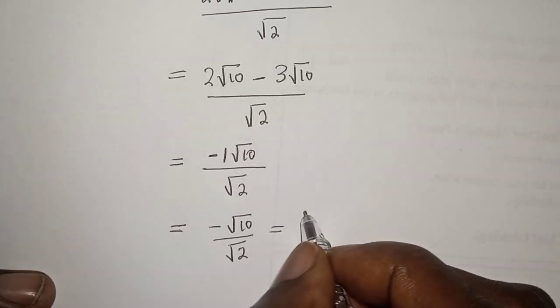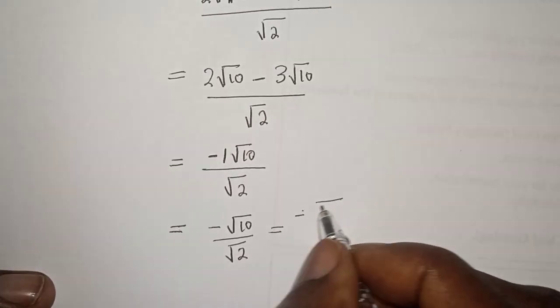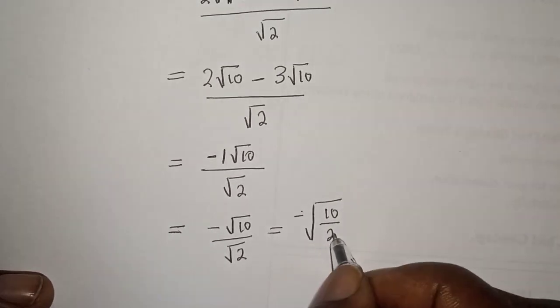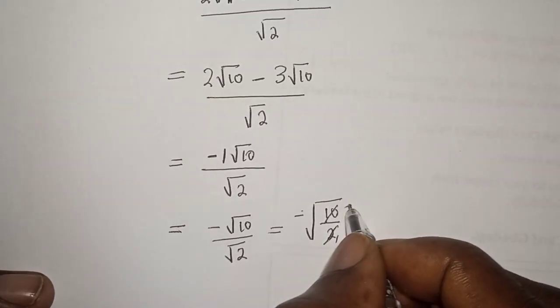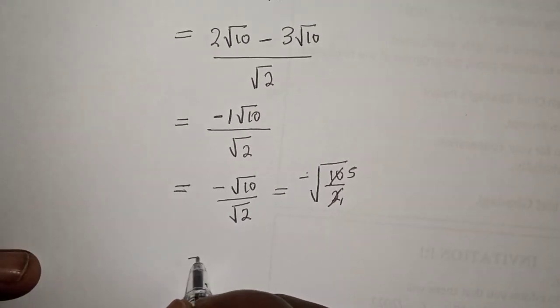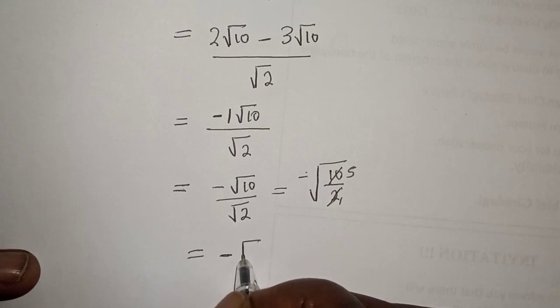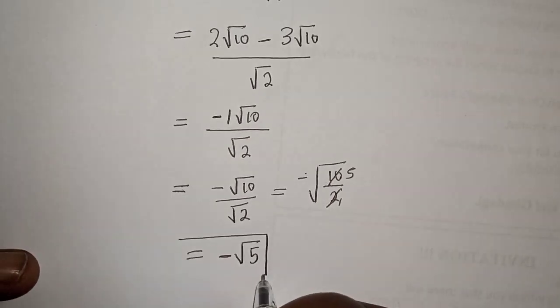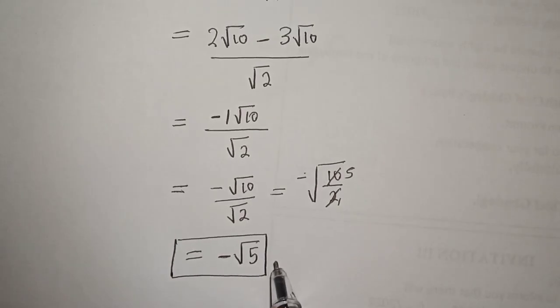And this can be written as minus √10 over √2, and this is equal to minus √5. This is the final answer.